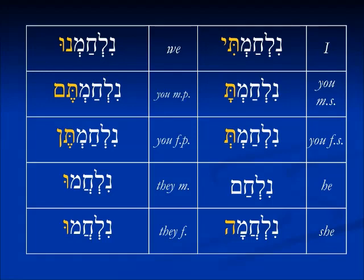So here we see the conjugation for l'cham, to be at war: nilchamti, nilchamta, nilchamt, nilcham, nilchama, nilchamnu, nilchamtem, nilchamten, nilchamu, nilchamu.